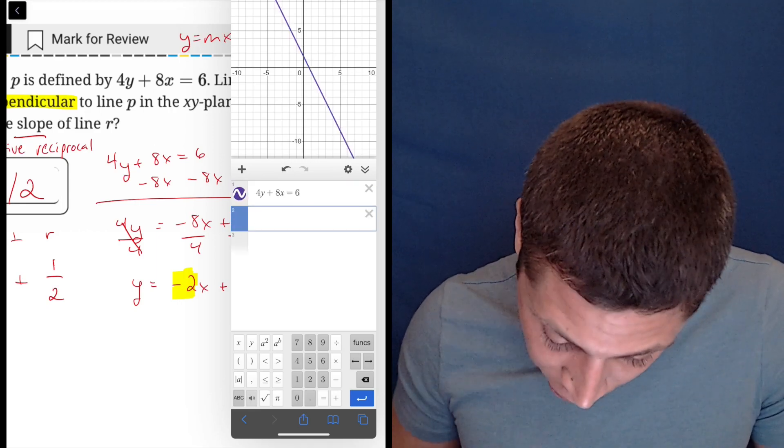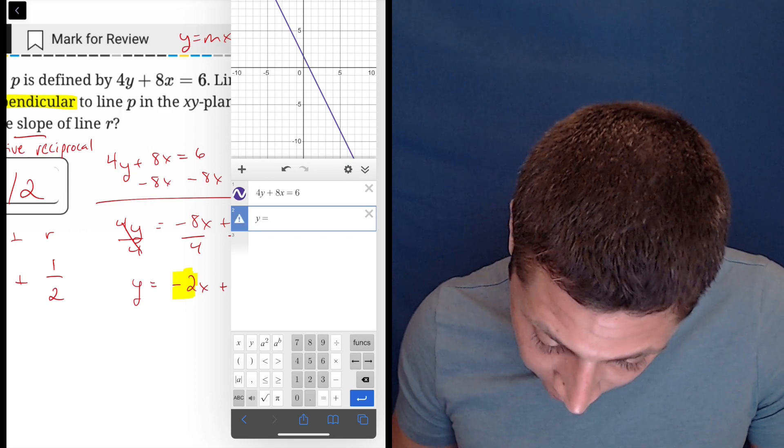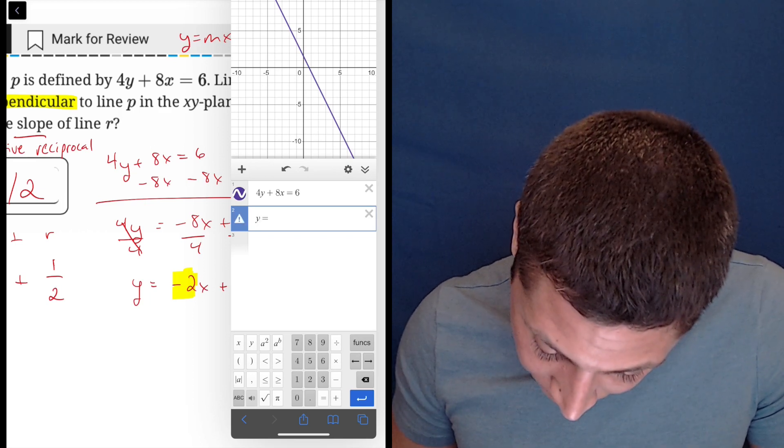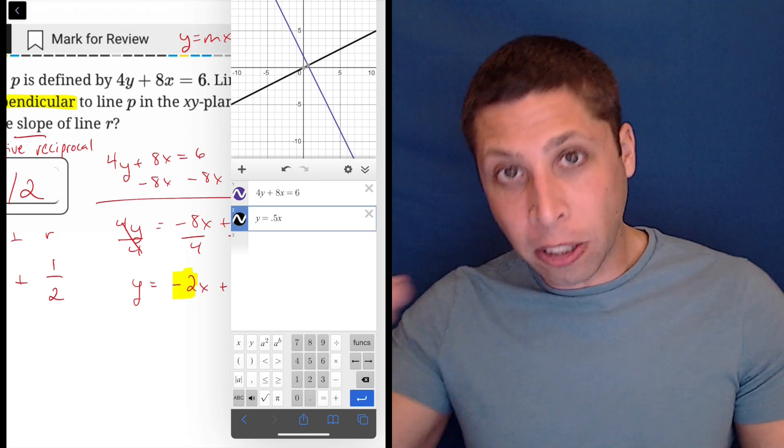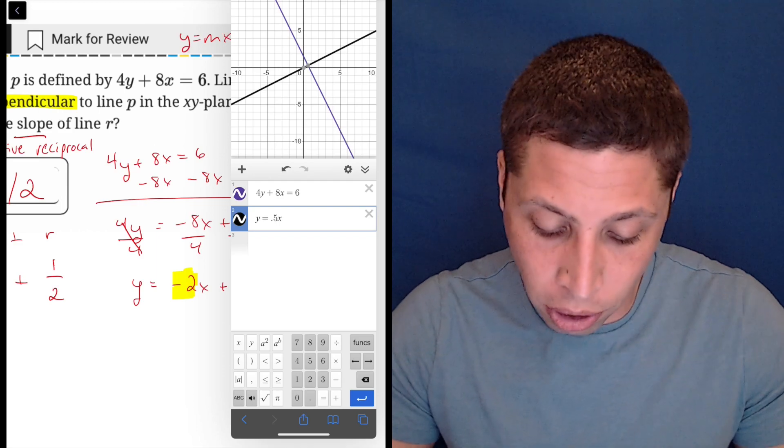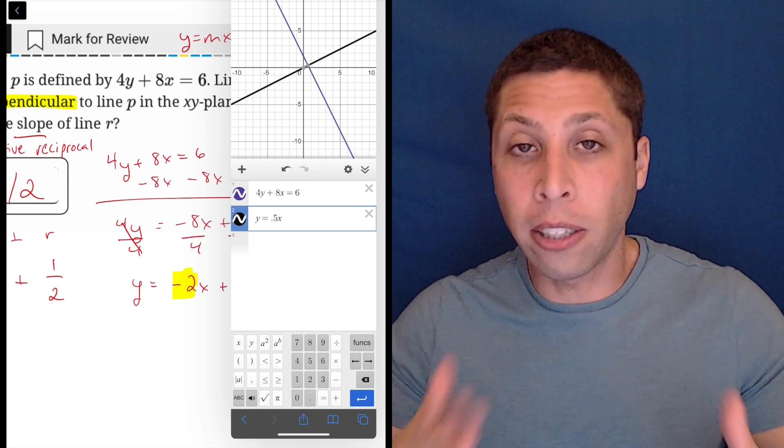And then for the other one, I'll just keep it in y equals mx plus b because that's how we kind of understand it. So it's a slope of one-half, so 0.5x. And you can see, perpendicular means they form a right angle, so you can see just in this picture that these two lines are clearly perpendicular.